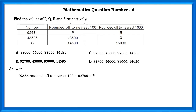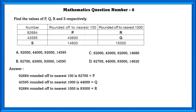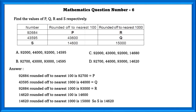92,684 rounded off to the nearest hundreds is 92,700, that is P. 43,595 rounded off to the nearest thousands is 44,000, that is Q. 92,684 rounded off to the nearest thousands is 93,000, that is R. The only option which satisfies P, Q and R is option D. To check if D is correct, we check S. 14,620 rounded off to the nearest hundreds is 14,600 and rounded off to the nearest thousands is 15,000. So S is equal to 14,620.